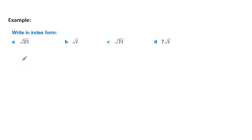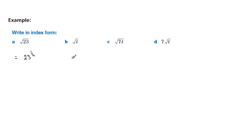We can use this rule to write expressions in index form. So the square root of 23 is the same as 23 to the half — these are identical, and you can check them with your calculator. For a variable like t, we can't check with a calculator, but we would write it as t to the half — just another way of writing it.